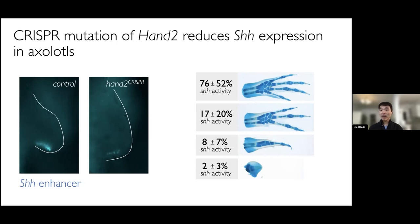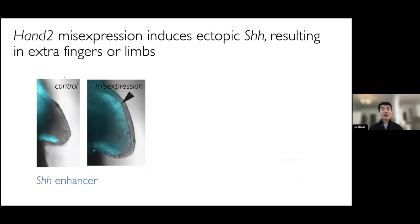We next performed the reverse experiment of misexpressing HAND2, using the same sonic hedgehog reporter as a readout. Compared to controls, when we misexpressed HAND2 throughout the limb bud — not only in the posterior part, but throughout — we found that it was able to induce anterior ectopic sonic hedgehog expression, as you can see by that arrowhead in the anterior part of the limb bud. When we grew up these animals, they usually had extra fingers — a phenotype in common with mouse misexpression animals.